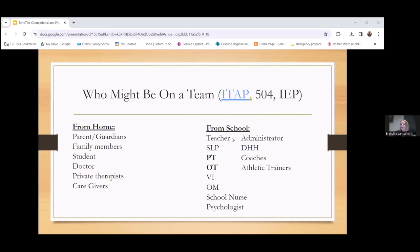Then we have the 504 and the IEP. People who you might encounter on these teams include parents, other family members, the student hopefully, doctors, private therapists, caregivers. From the school setting, OT and PT are really important members of this. There are so many different things that they can help the accommodations team, that ITAP team, the 504 and the IEP team do for the student. There are recommendations that can be made from your professional standpoint as you're watching the student and seeing the impact of their injuries.